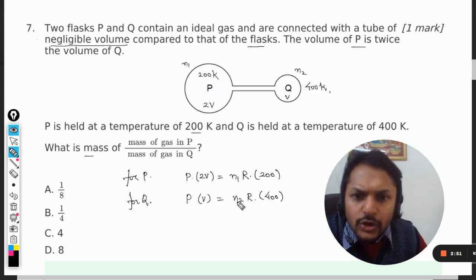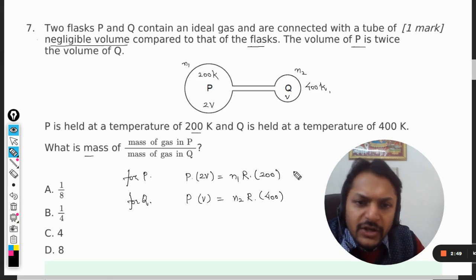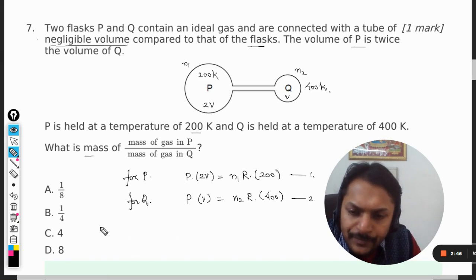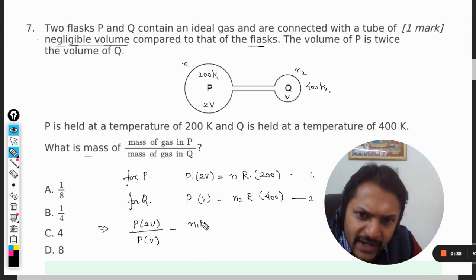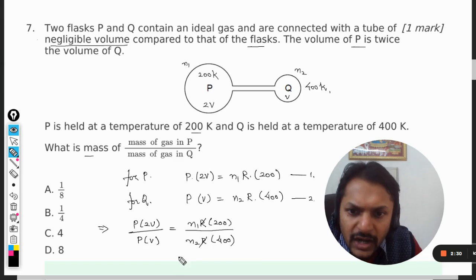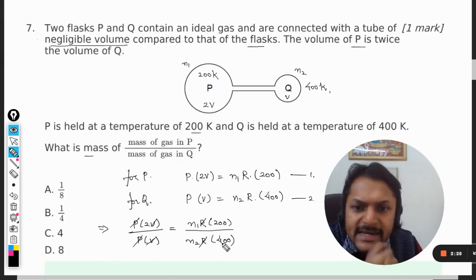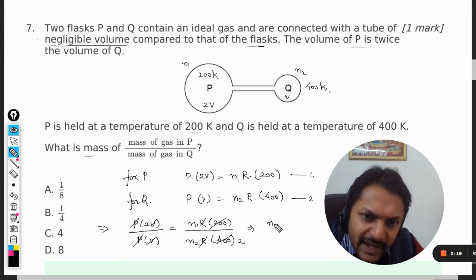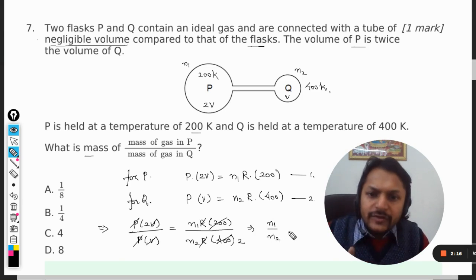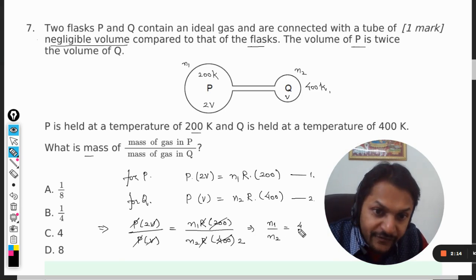Clearly now, what we can do is divide these two equations 1 and 2. So P into 2V divided by P into V equals n1 into R into 200 divided by n2 into R into 400. R and R get cancelled out, V and V get cancelled out, P and P get cancelled out. We can cancel 200 with this, it will be 2 here, so 2 will be cross-multiplied.